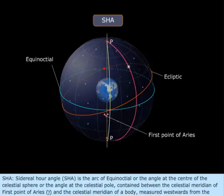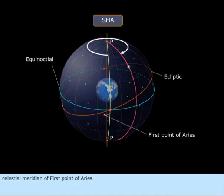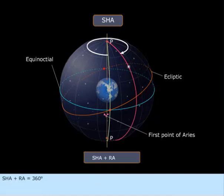SHA. Sidereal Hour Angle, or SHA, is the arc of the equinoctial, or the angle at the center of the celestial sphere, or the angle at the celestial pole, contained between the celestial meridian of the first point of Aries (or gamma) and the celestial meridian of a body, measured westwards from the celestial meridian of the first point of Aries. SHA plus RA equals 360 degrees.